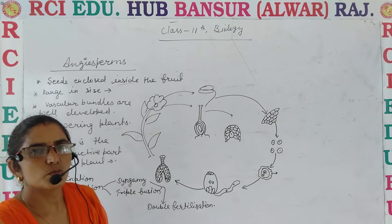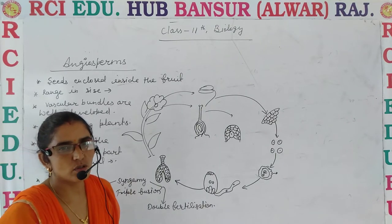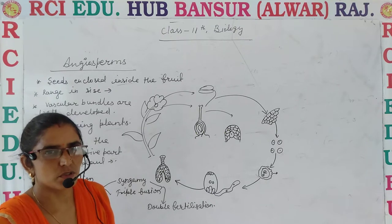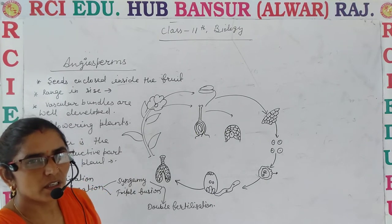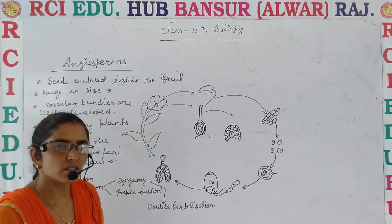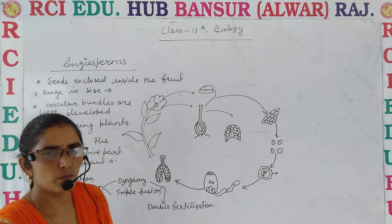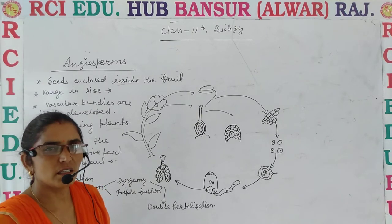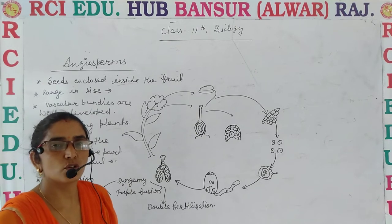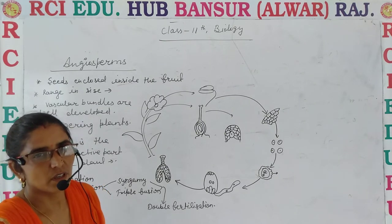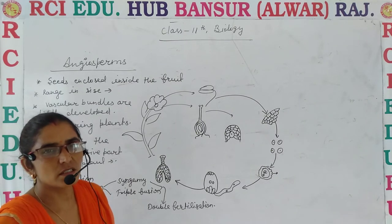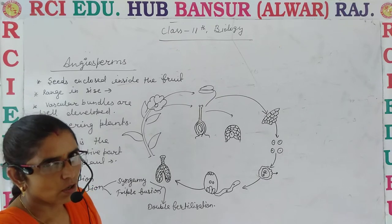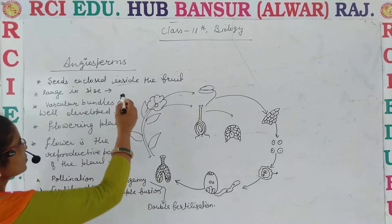Angiosperms are the advanced plants because they have all the well-developed systems. For example, one thing is that they are seed-producing plants, they are flowering plants and the seeds are enclosed inside the fruit. Second, they have well-developed vascular bundles, meaning they have tracheids and companion cells. So let's discuss angiosperms.